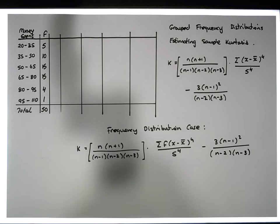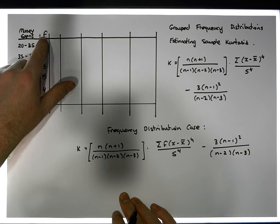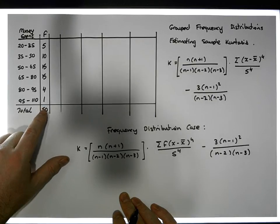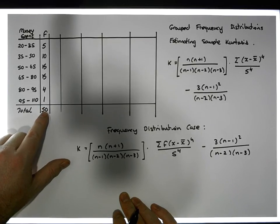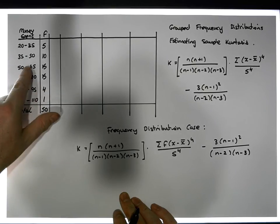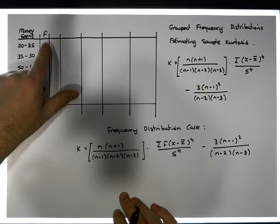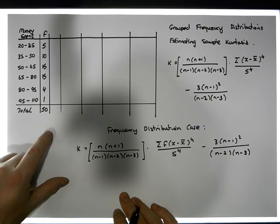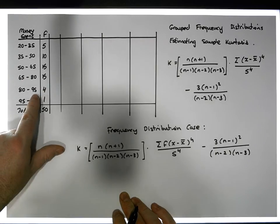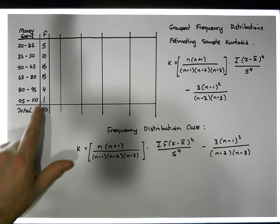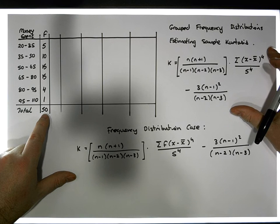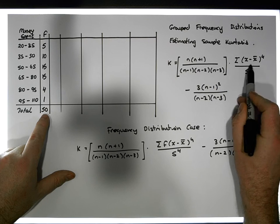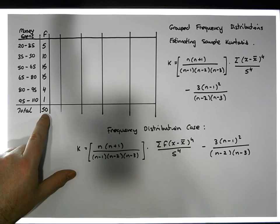Here's the frequency distribution I'm working with. It represents answers to a question asked to 50 people: how much money did you spend over the weekend? Responses fall into six categories — for example, 5 people spent between 20 and 35 euros, 15 people between 50 and 65, and 4 people between 80 and 95. We don't have the 50 individual observations, so we apply the grouped frequency formula.